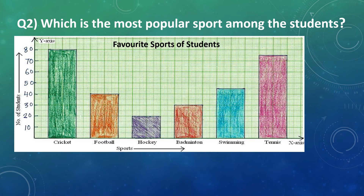Question number 2: Which is the most popular sport among the students? In this question, we will compare the height of each bar that represents sports. We can see the highest bar is of cricket, which reaches up to the scale of 80. Therefore, the answer will be cricket.